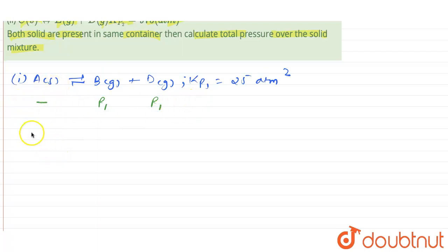Moving forward to the second equation, the reaction is C solid giving E gas plus D gas, where the Kp2 value is given as 975 atm square. At equilibrium, we will not have any partial pressure for C solid because it is a solid. E gas, assuming we have P2 as the partial pressure, and D will have P2. It is clearly visible that D is obtained in both reactions, and the reactions are in a closed container, the same container.